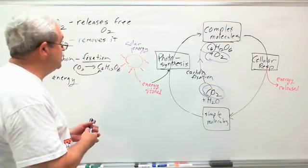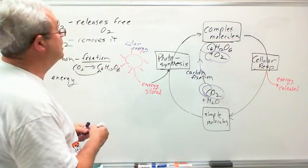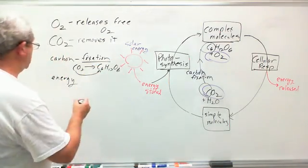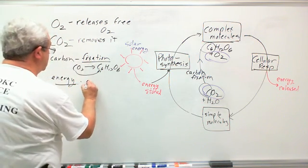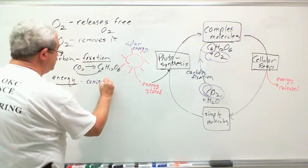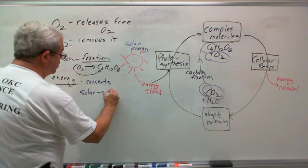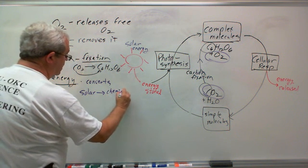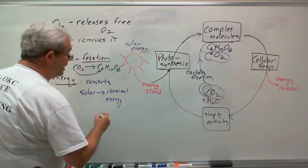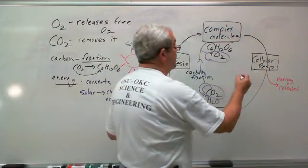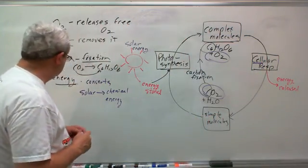They need complex molecules that are taken apart by cellular respiration to release energy to keep our cells going. And so, what does photosynthesis do here? It takes solar energy and converts it to chemical. Photosynthesis converts solar to chemical energy. And where do we need that chemical energy? In our cells for the process called cellular respiration.